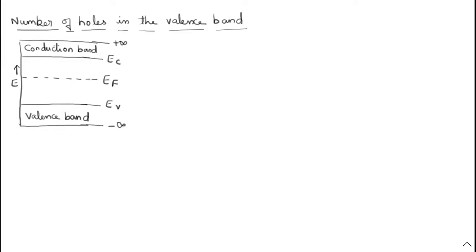Dear students, now we are going to discuss the number of holes in the valency band. In the previous video, we discussed the number of electrons in the conduction band — the upper part. Now we are going to discuss this valency band: how many holes are present in the valency band? I have drawn the same diagram. This is for the intrinsic semiconductor. Let me explain the diagram once again.